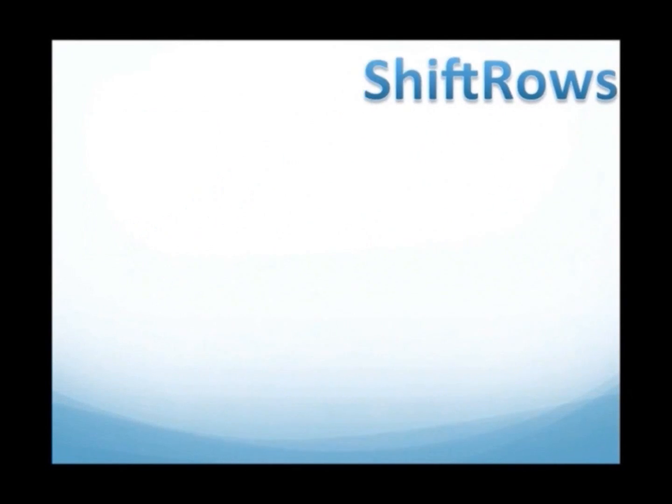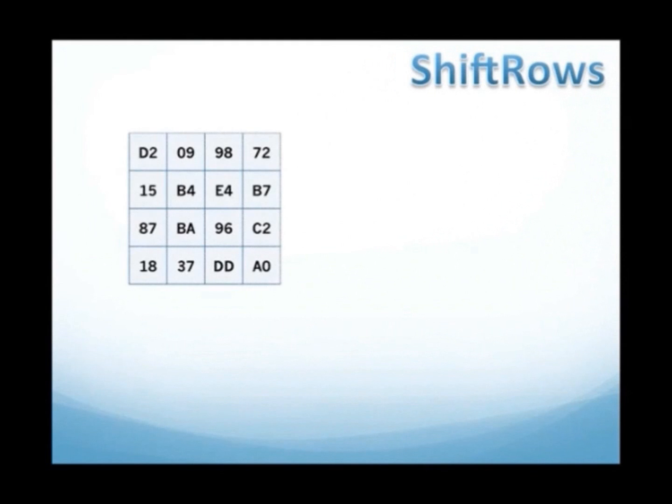ShiftRows: This step consists of the rotation of the bytes in the rows of the state matrix. The first row doesn't rotate. The second row rotates one byte. The third row rotates two bytes. The fourth row rotates three bytes.